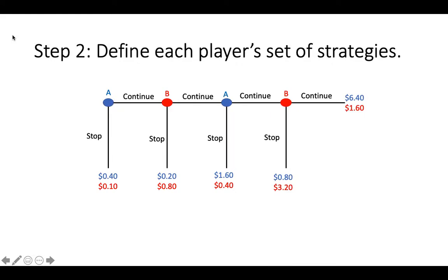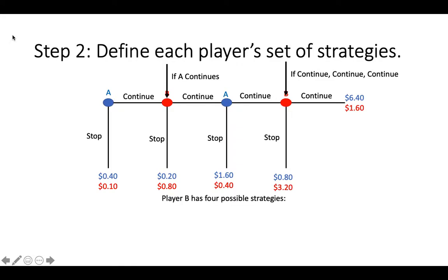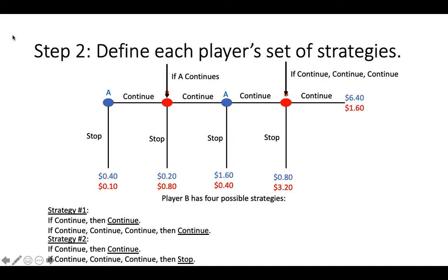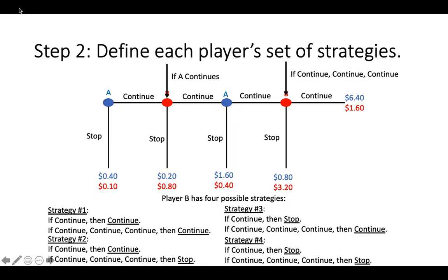We can go through the same procedure for Player B. Player B also has two decision nodes. The first one occurs if Player A starts the game by choosing continue, and the second one occurs if Player A chooses continue on both of their turns and Player B also chooses continue on their first turn. This means that Player B also has four possible strategies: always choosing continue, continuing and then stopping, stop and then continue, and always stopping. Remember that the complete set of possible strategies from which a player can choose is called a player's strategy set.